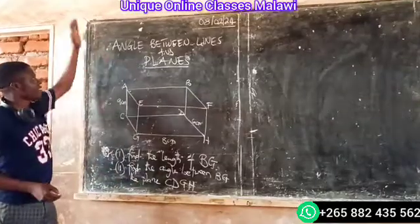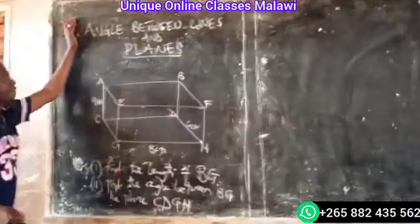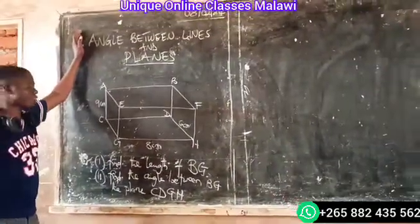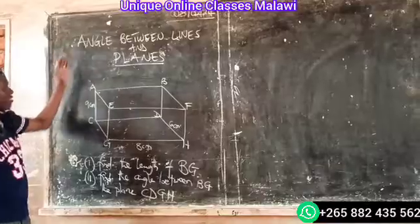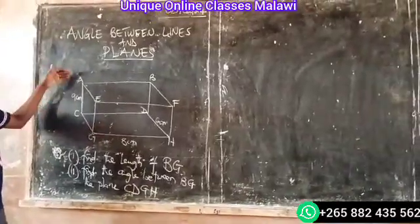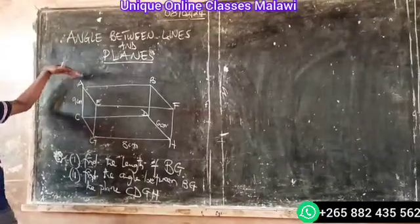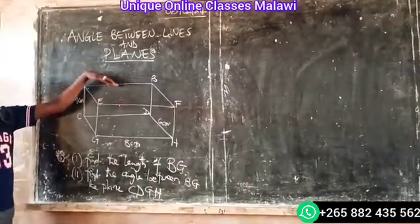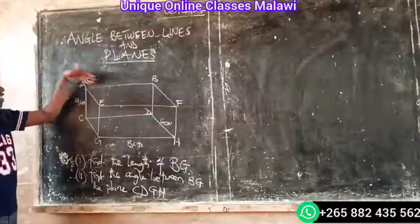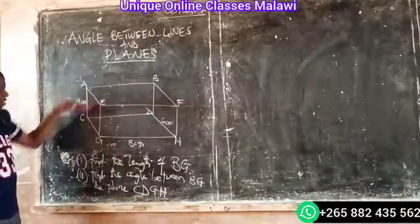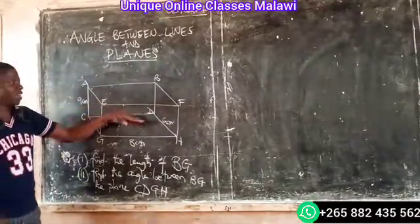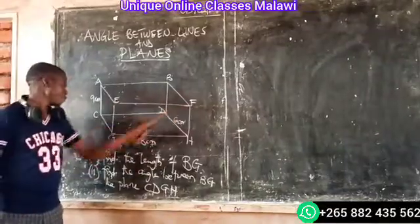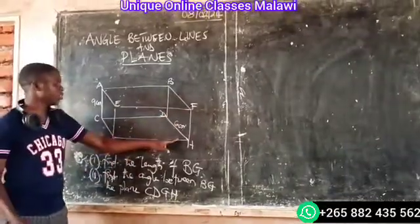Let's start. Finding angles between lines and lines. We have this diagram, and the dimension of my side is 6. We have that side here: A, B, C, D. And now for this side again, which is E, F, G, H.